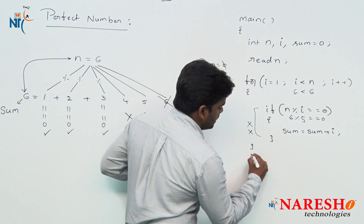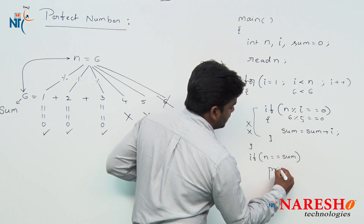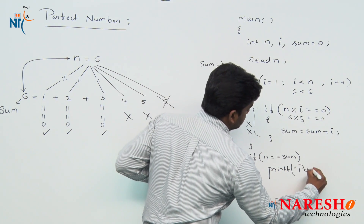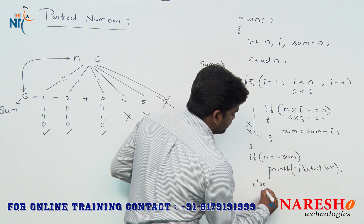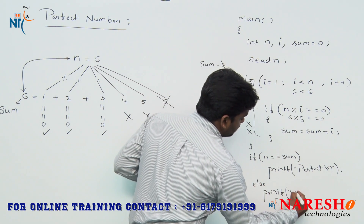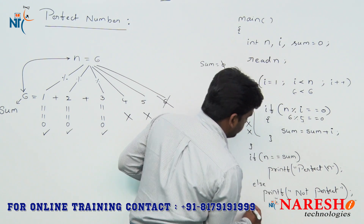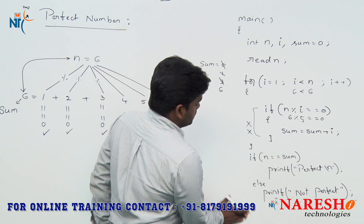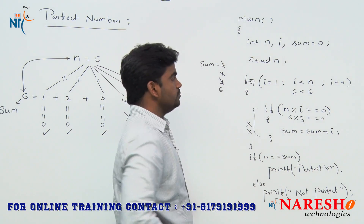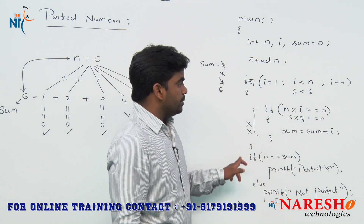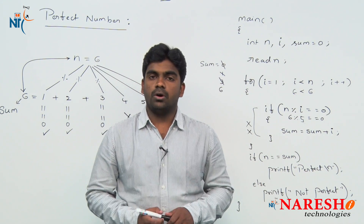We need to check the condition: if N value equals the sum value, then we print 'it is a perfect number'. Else, if sum is greater than or less than N, then we write 'not a perfect number'. This is the program — the for loop ending and main method ending. This is the logic to implement a program that checks whether a number is a perfect number or not.